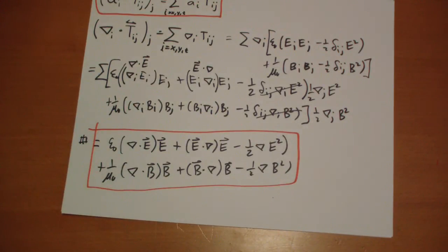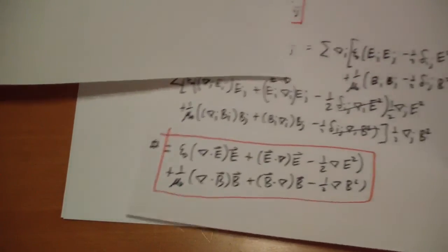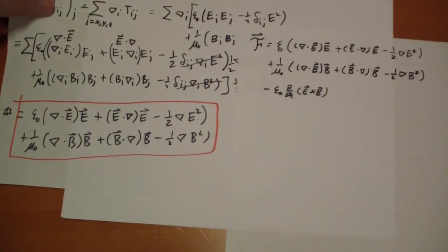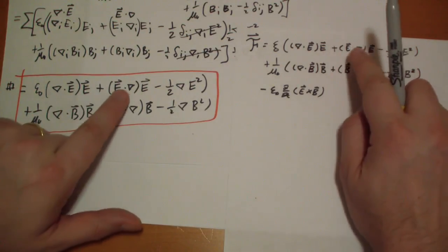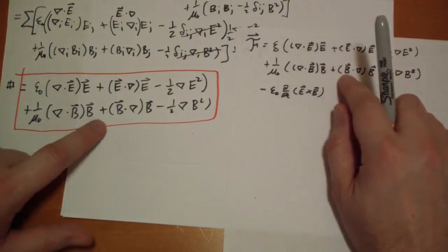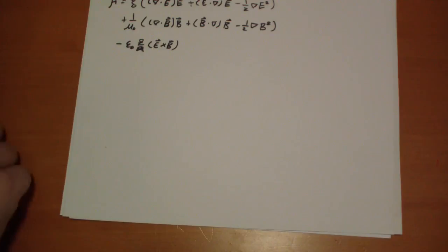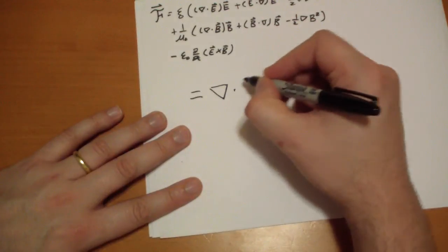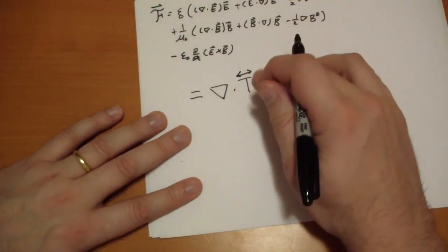So here we have the result of the divergence of Maxwell stress tensor. And here we have, let's see if I can put them side by side. This is beautiful. This is the force per unit volume, word for word it matches except for this extra term. And so we can actually express our force per unit volume with the amazingly simple and beautiful simplification.